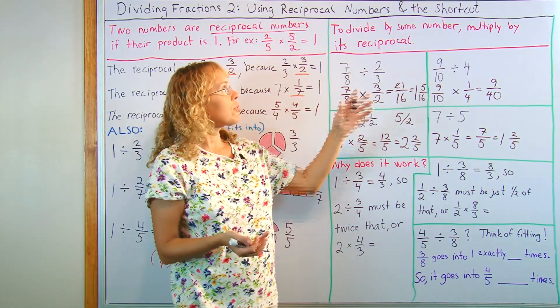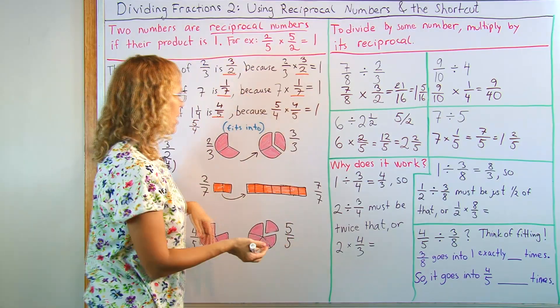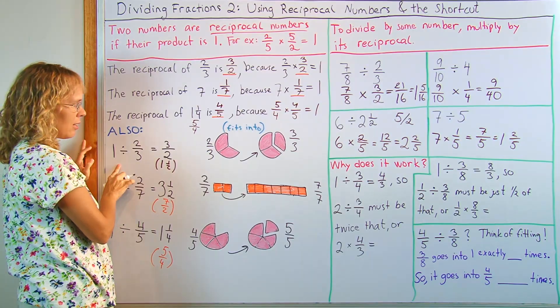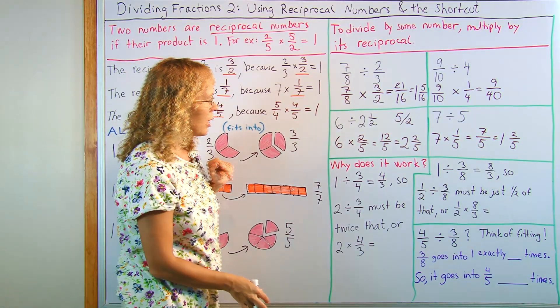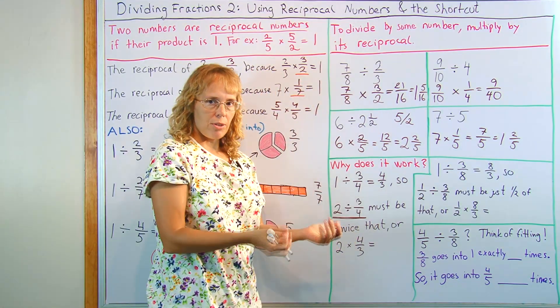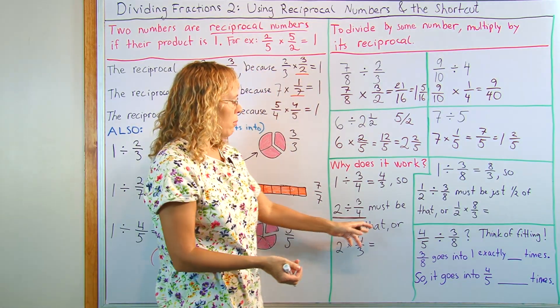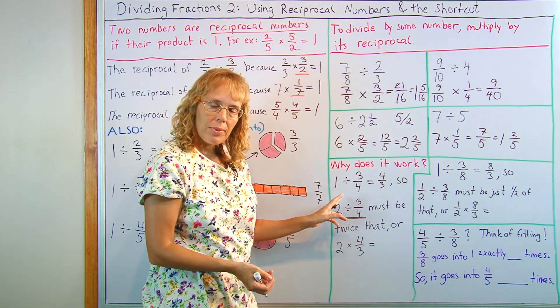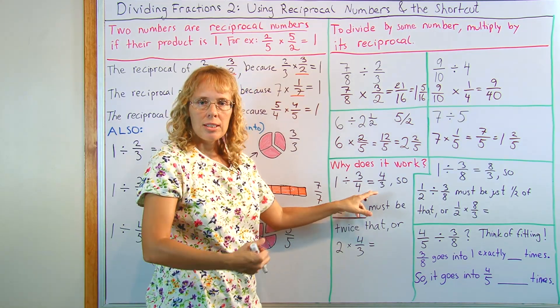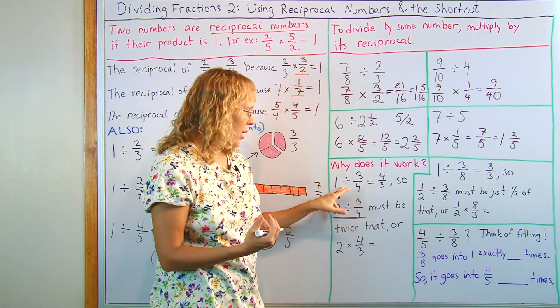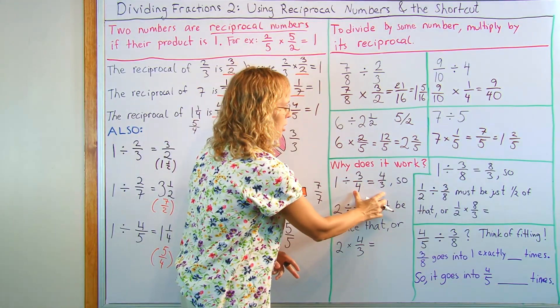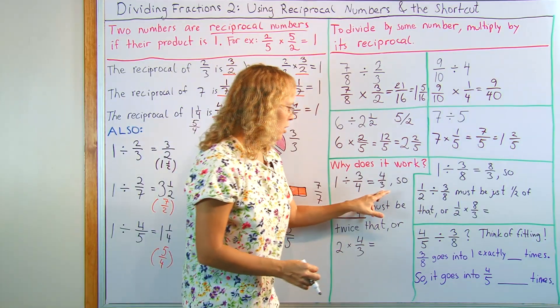Now, let's look at why does this rule work? And that is where we will fall back on this idea of fitting. Fitting the divisor into the dividend and the reciprocal numbers. I'm looking basically at this problem first. Here. Two divided by three-fourths. Which is how many times does three-fourths fit into two? But as a helping problem, I will use this. How many times does three-fourths fit into one whole pie? And that, I know. It's going to be four-thirds or one and one-third times. Because these are reciprocal numbers. So I know the answer to this problem.